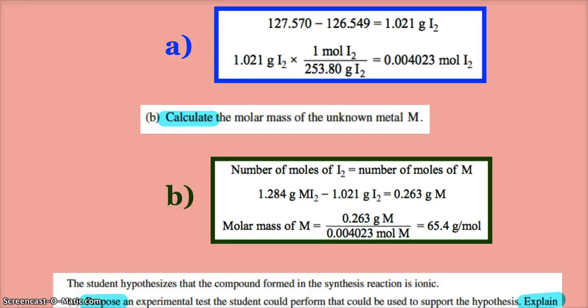So my 0.263 grams of metal divided by my 0.004023 is 65.4 grams per mole. Maybe they could have asked you to identify that too. If you go to the periodic table, that would be your good friend zinc, but they just wanted the molar mass.